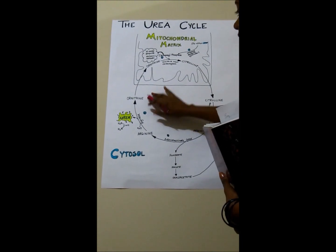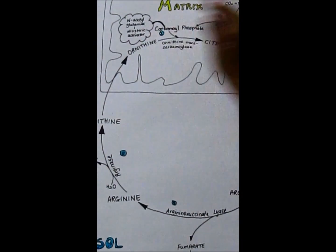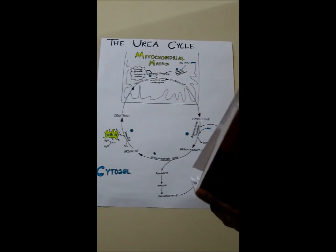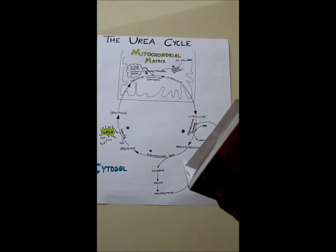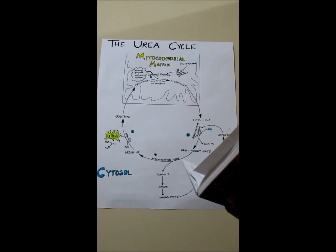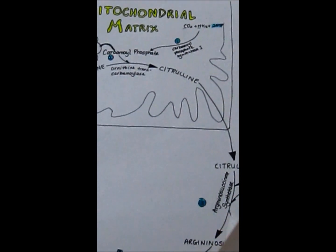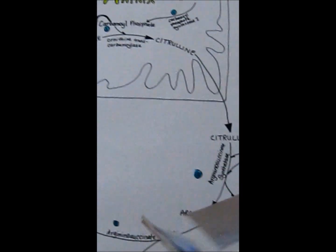When arginine is formed, it is converted to ornithine. Arginase is used and this is where urea is formed. Water goes into this reaction to form these two products. When ornithine is formed, it goes back into the mitochondrial matrix and the cycle repeats. For the exam, I can ask how many ATP molecules are consumed per turn of the cycle, or how many high energy phosphates are needed. Also, any deficiency in any one of these enzymes can cause disorders in the urea cycle.